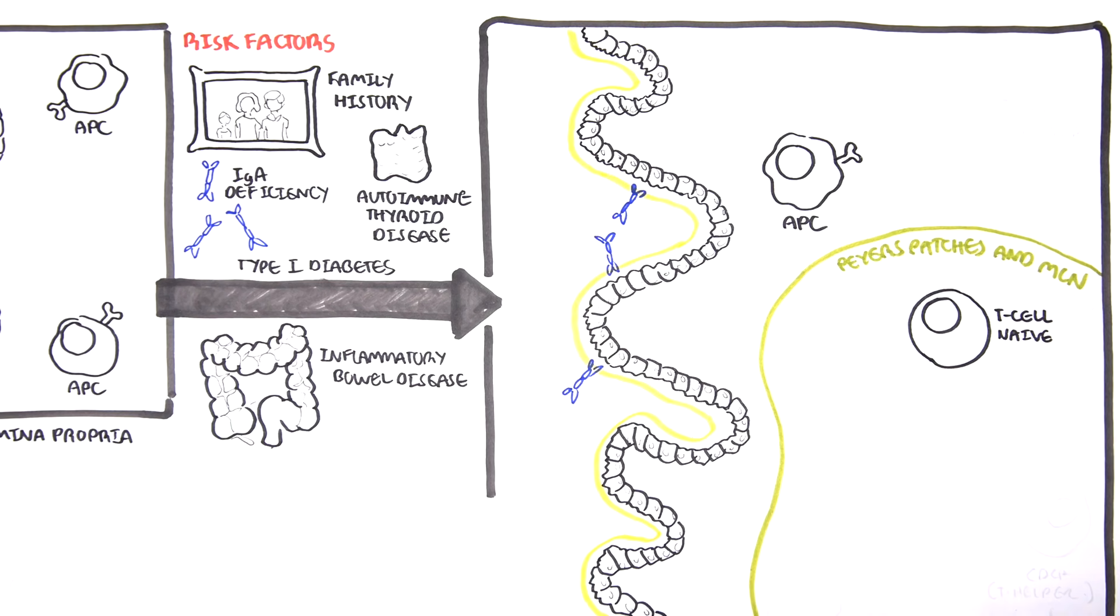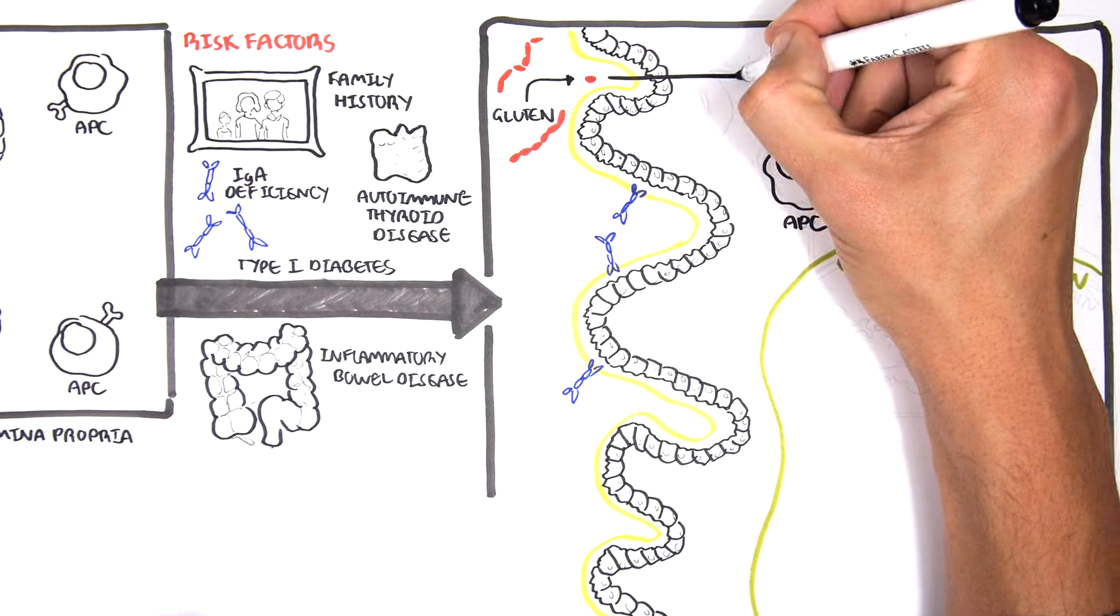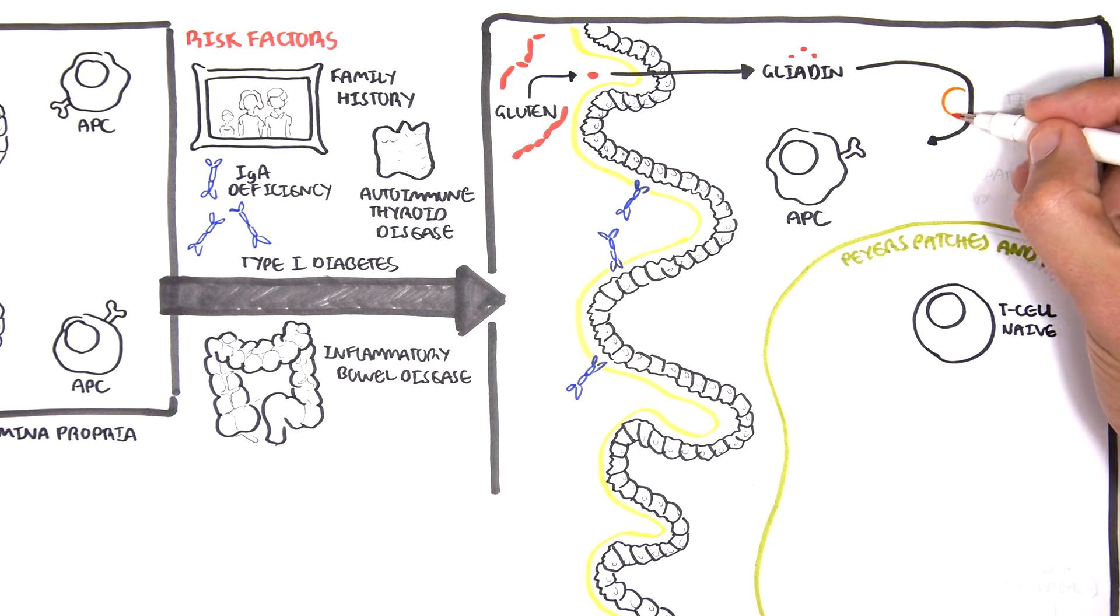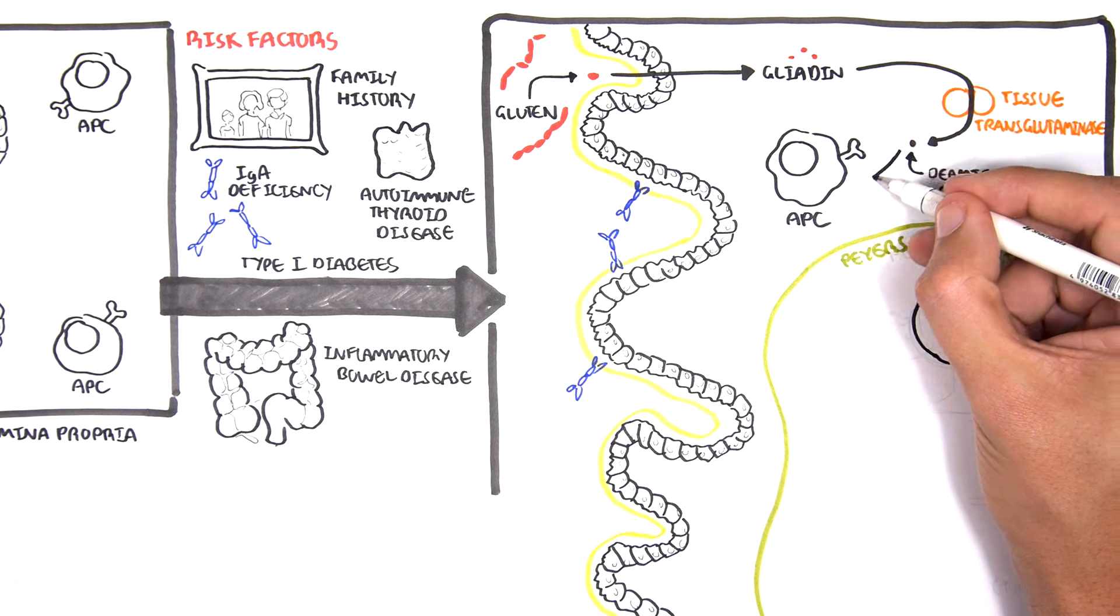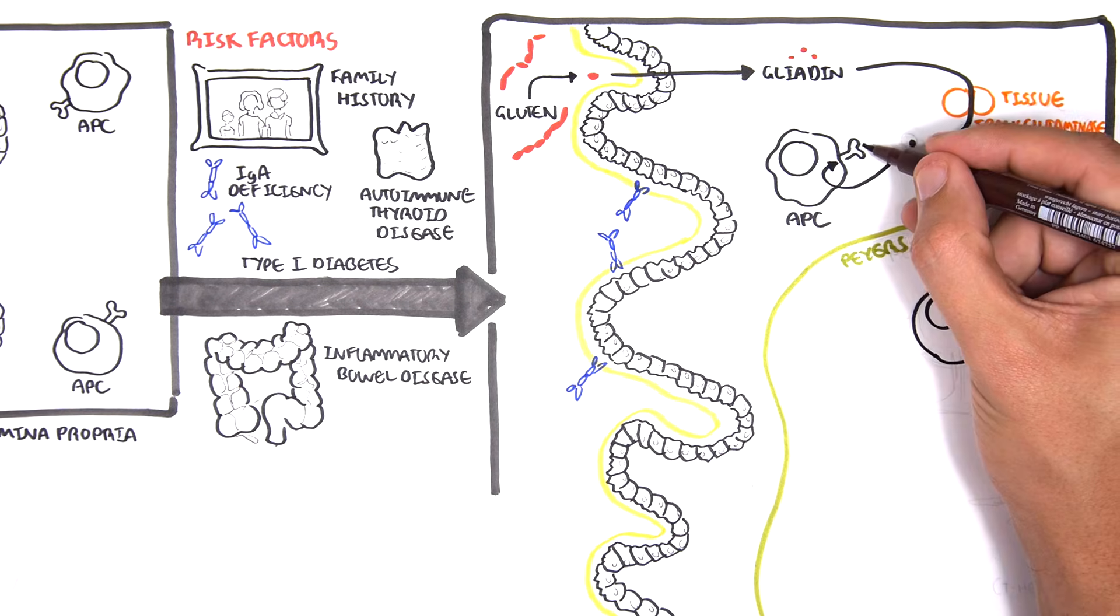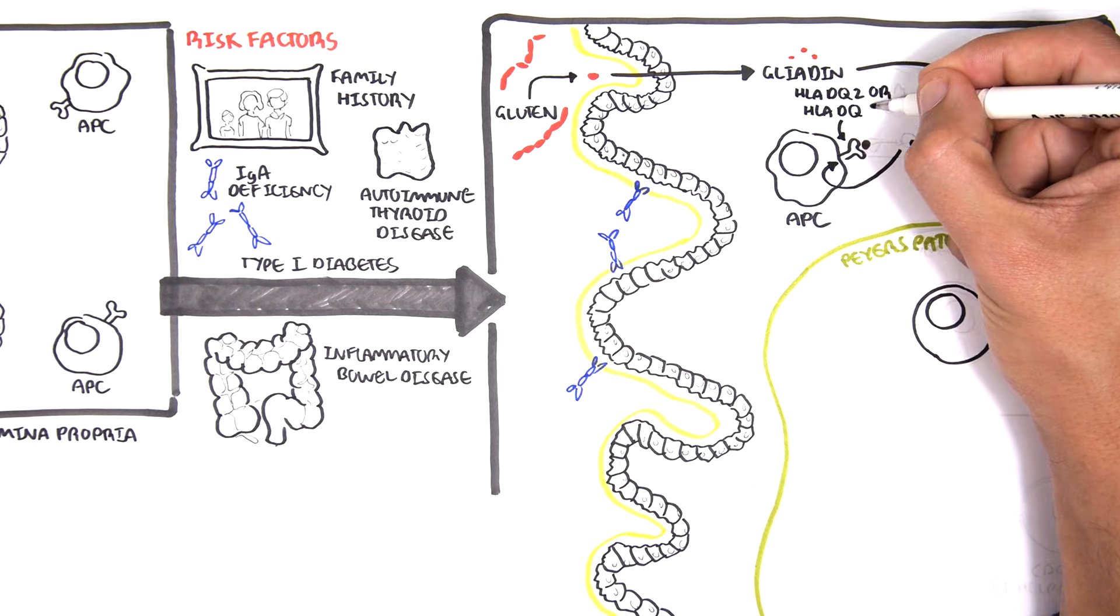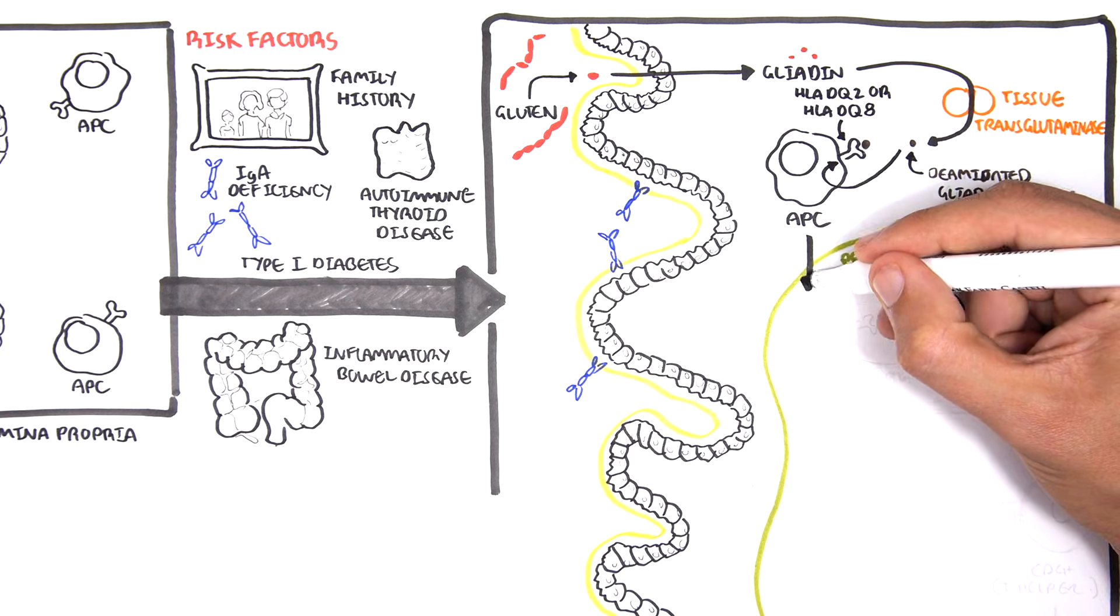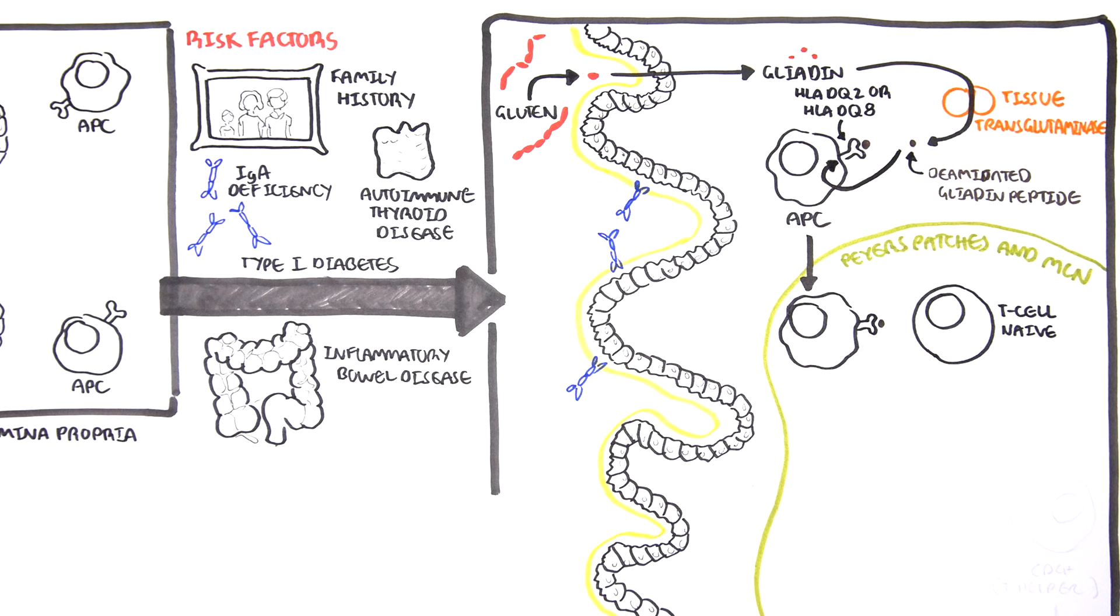So the pathogenesis theory goes something like this. Gluten-containing food is broken down, and a part of gluten, a specific part called gliadin, is absorbed. Gliadin through the enzyme tissue transglutaminase, or TTG, gets converted to deaminated gliadin peptides. The deaminated gliadin peptides get picked up by antigen-presenting cells within the area. The antigen-presenting cell will then present this peptide onto a specific class of molecule called the HLA-DQ2, or HLA-DQ8. This antigen-presenting cell will bring this deaminated gliadin to nearby lymphoid tissues, such as the Peyer's patches or the mesenteric lymph nodes.